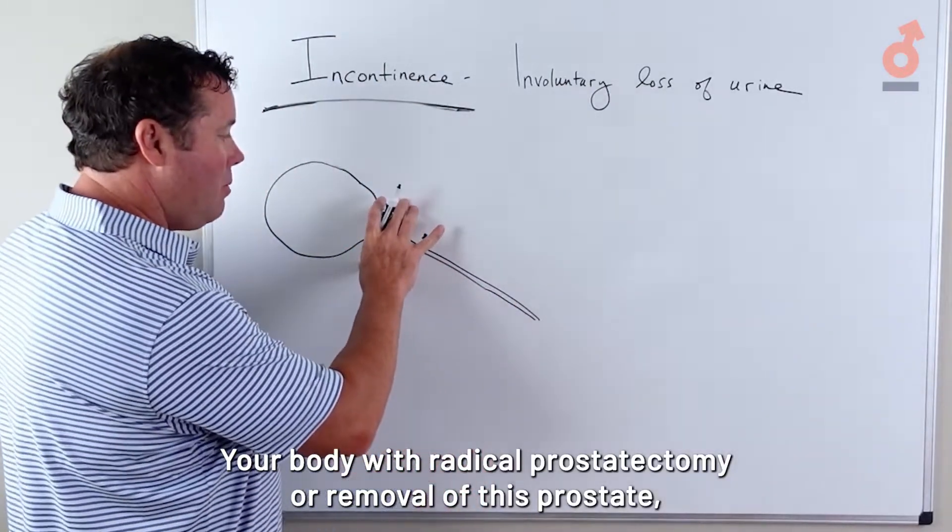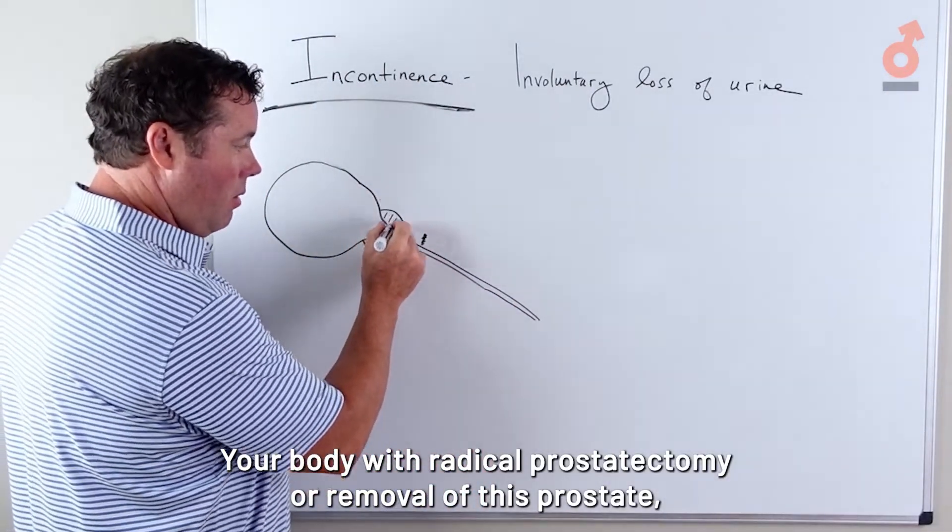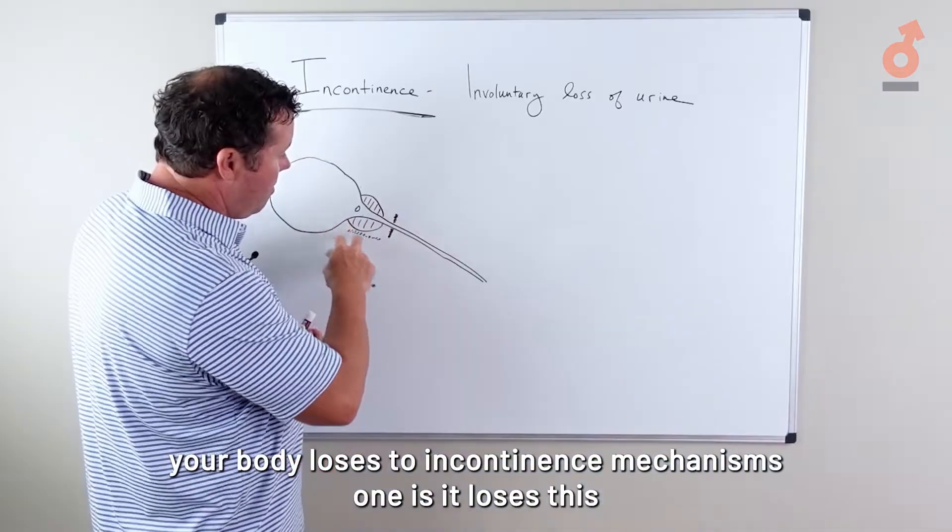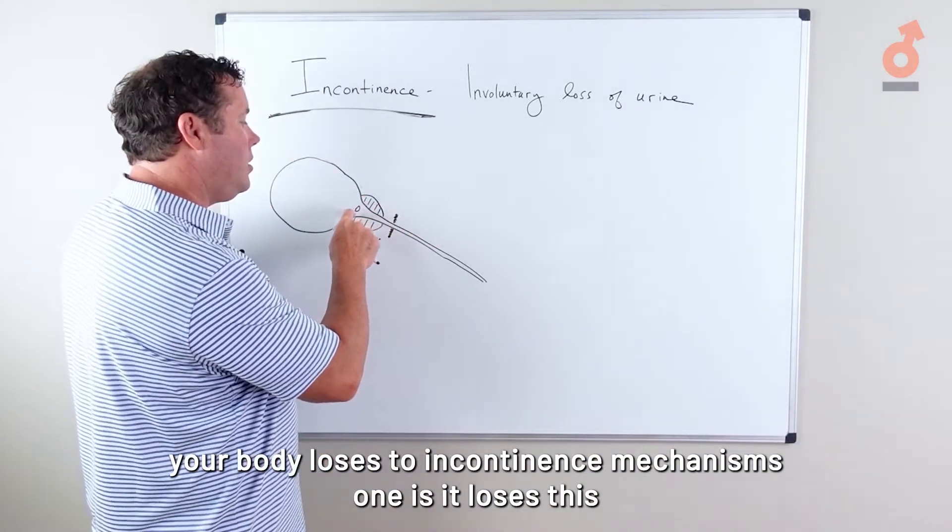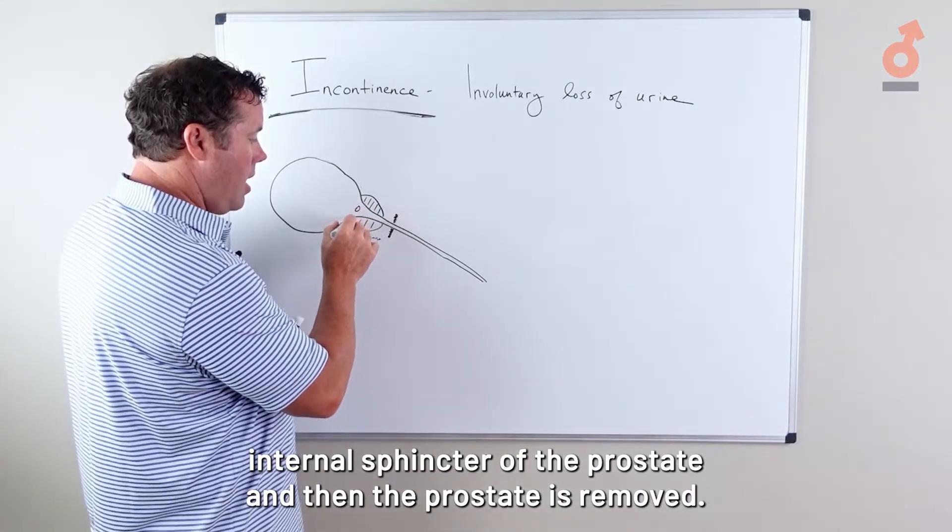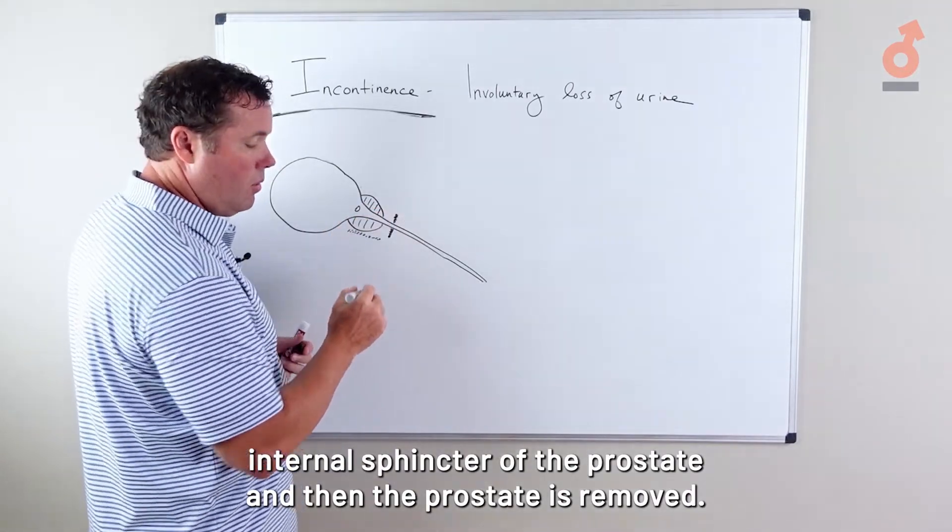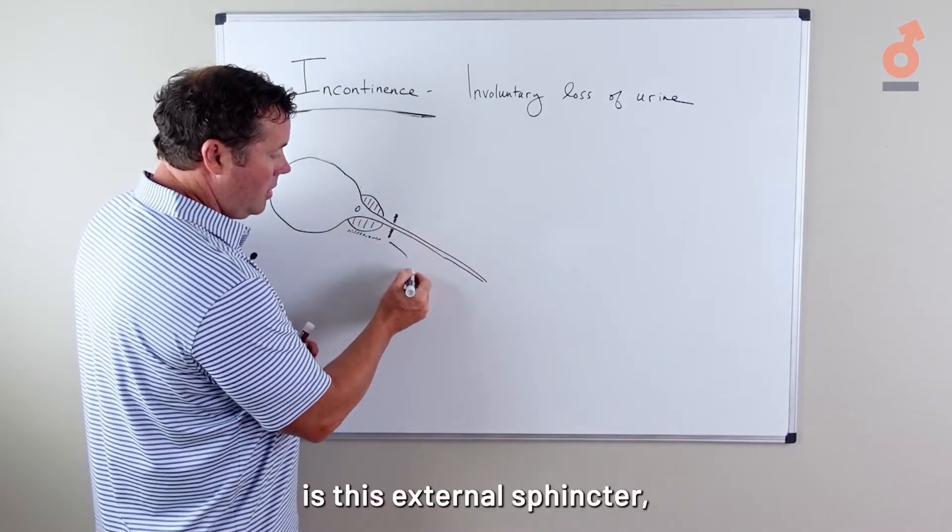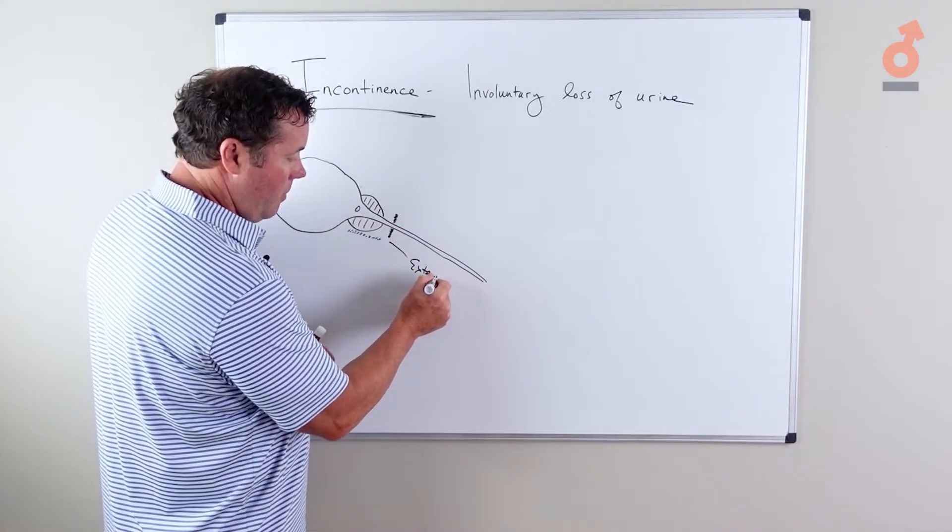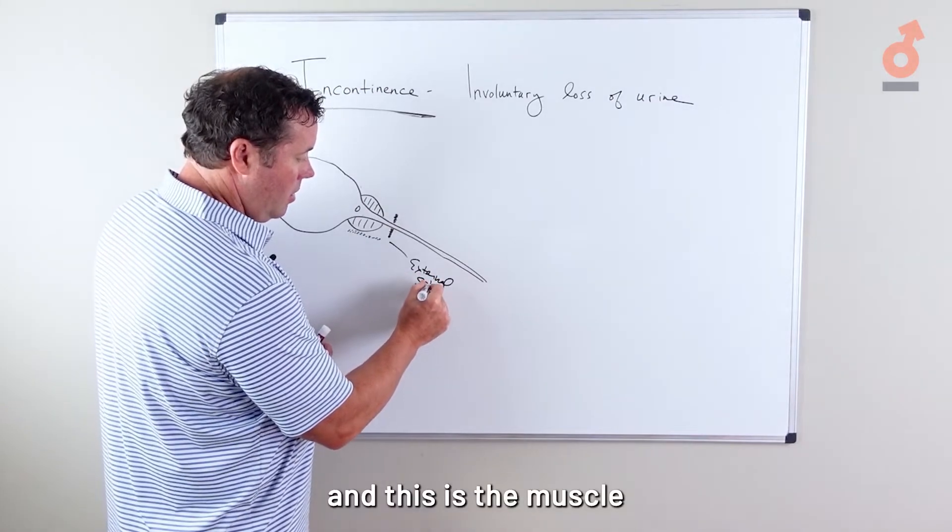Your body, with radical prostatectomy or removal of the prostate, loses two incontinence mechanisms. One is it loses this internal sphincter of the prostate. When the prostate is removed, the only incontinence mechanism that is left is this external sphincter, and this is the muscle that you squeeze when you want to stop that flow of urine.